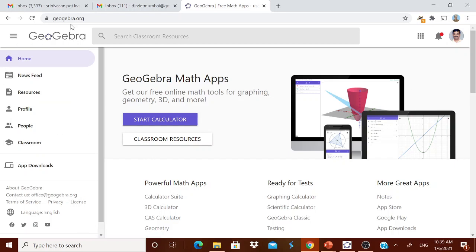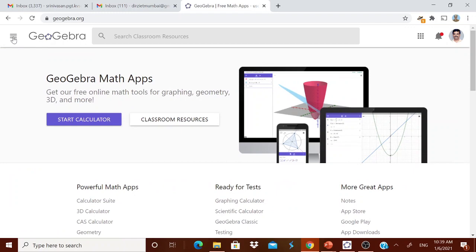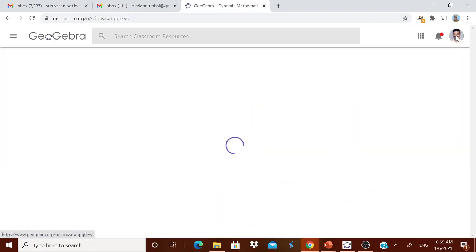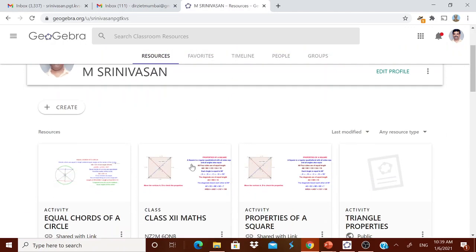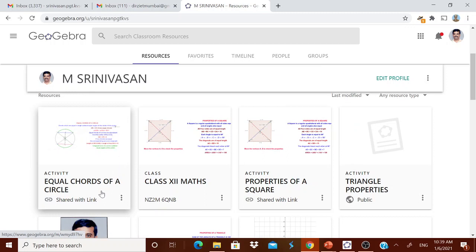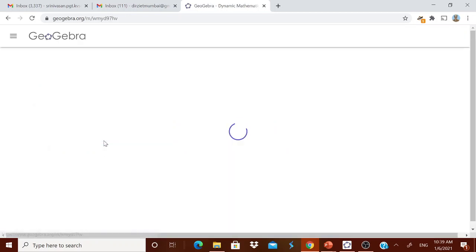Now you see whenever you are seeing this GeoGebra.org. On the right side what you are going to use. You can sign in also. From here you can sign in. Now I already sign in. But when I am going for it, you see whatever I have done it. The equal chord of a circle just now I have uploaded. It is coming over here. Now I can share it with the link. Suppose if I open it.